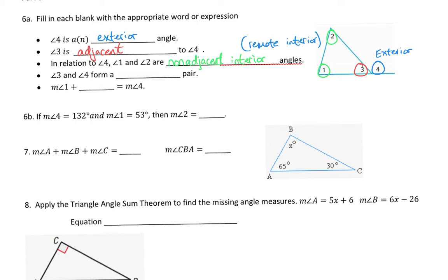Angle 3 and 4 form a what kind of pair? Well, they're right next to each other, and they're sitting on a line. So what do we call it when they're right next to each other and they're sitting on a line? We call that a linear pair.